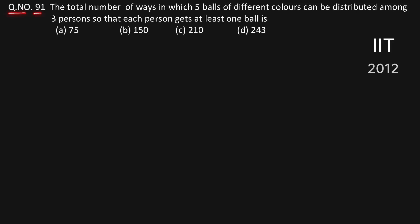Question number 91. The total number of ways in which five balls of different colors can be distributed among three persons so that each person gets at least one ball.